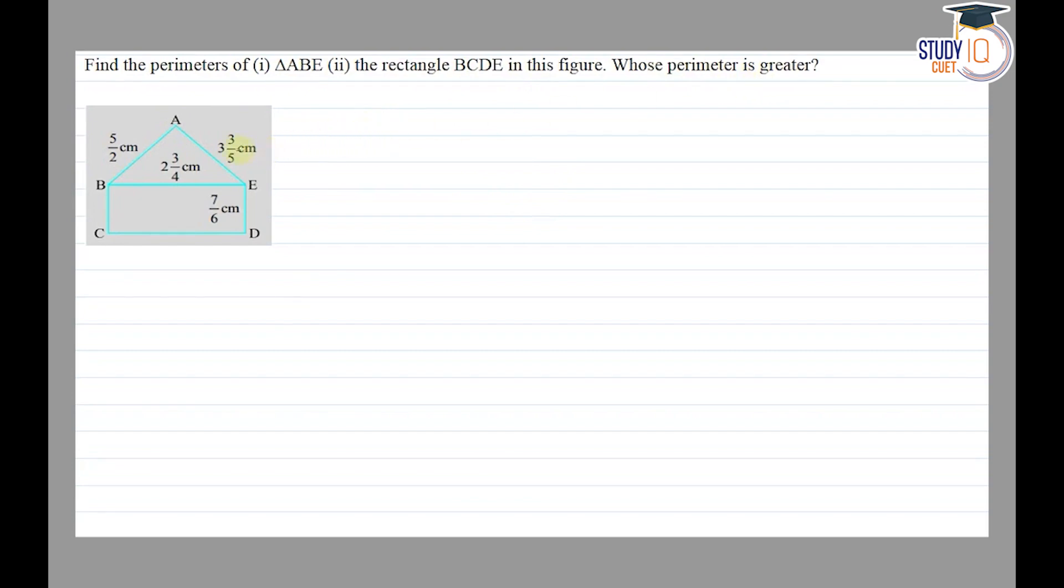Perimeter of triangle ABE is equal to the sum of all sides. So there are 5 by 2 plus 2 and 3 by 4 plus 3 and 3 by 5. Firstly I will change to improper fractions. So 5 by 2 plus 4 times 2 is 8 plus 3 gives 11 by 4, plus 5 times 3 is 15 plus 3 gives 18 by 5.